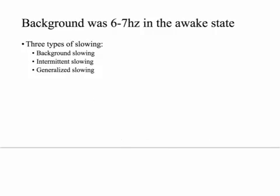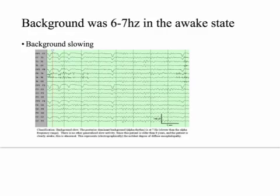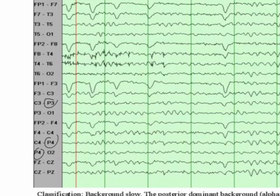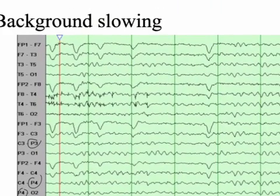We had background slowing in our patient. There are actually three types of slowing — background, intermittent, and generalized — and these give you the degree of how severe the encephalopathy is, from least to most severe. Background slowing is typically in the posterior leads — when you see a 'P' it typically refers to a posterior segment.